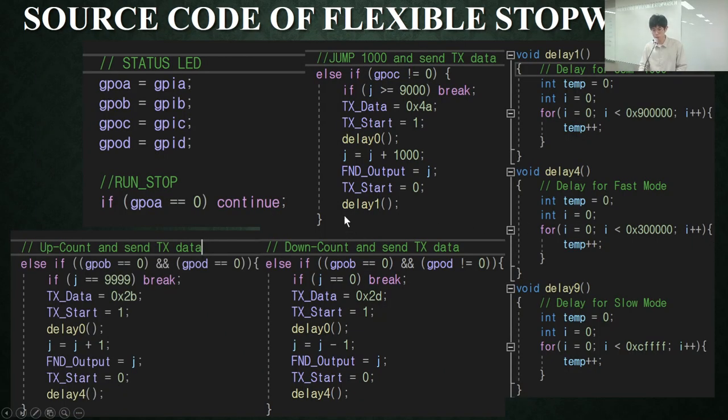This is the source of the flexible stopwatch. This is for run-stop, up-count, down-count, jump 1000, and delays. There are different delays of the program.